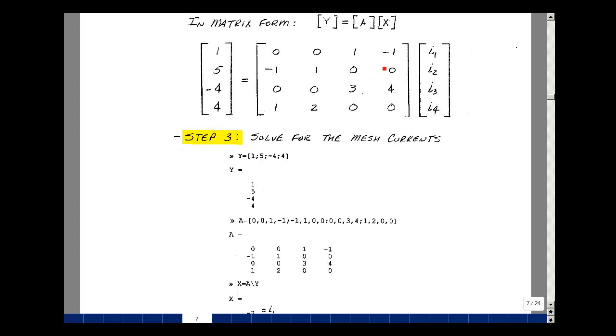And then my A matrix: second row is 0, 0, 1, minus 1; first row is minus 1, 1, 0, 0; third row is 0, 0, 3, 4; and fourth row is 1, 2, 0, 0. When you hit enter, it echoes back the matrix, and you can check the entries. If they're wrong, you can go back and change this with the arrow key.